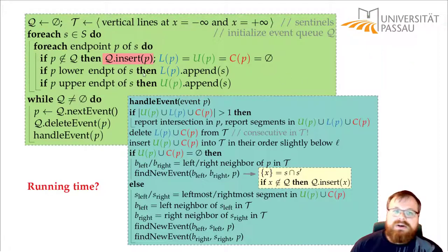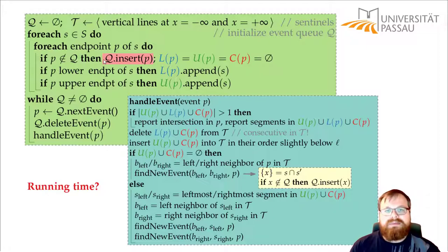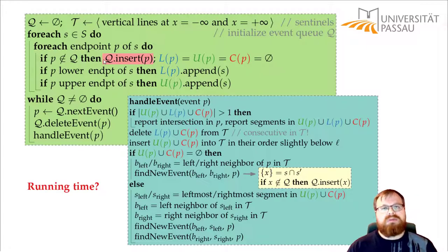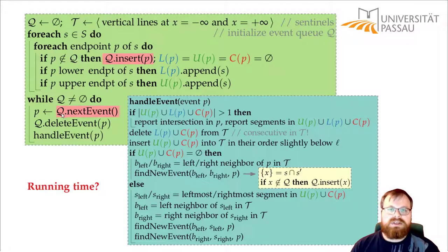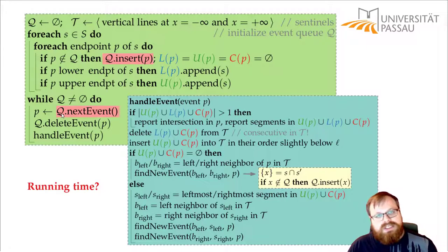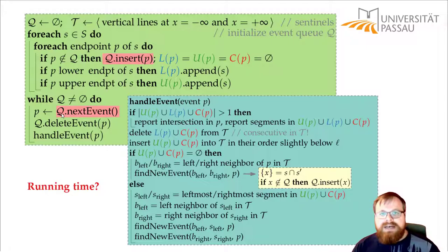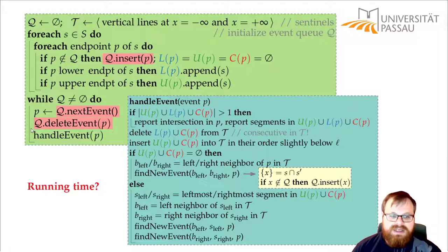But later, we don't really know how many points we have in the event queue. There can be quadratically many intersection points, so we can have many more points in our queue. Then we have the second loop, and here in every step, we take the next event from the queue. So we just pick the very first element from the balanced binary search tree, which again takes logarithmic time in its size. We remove it from the tree, again logarithmic, and then we handle it.